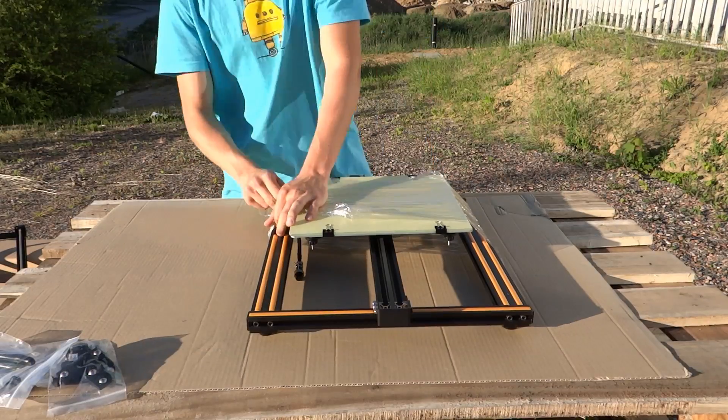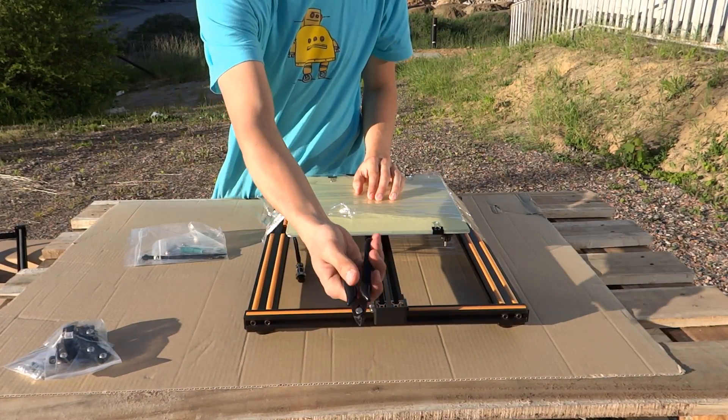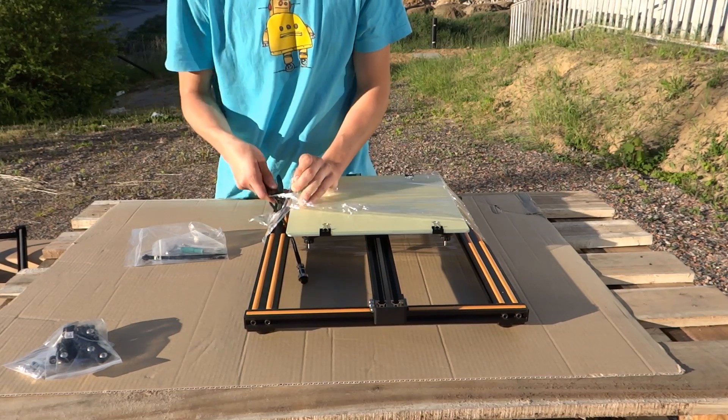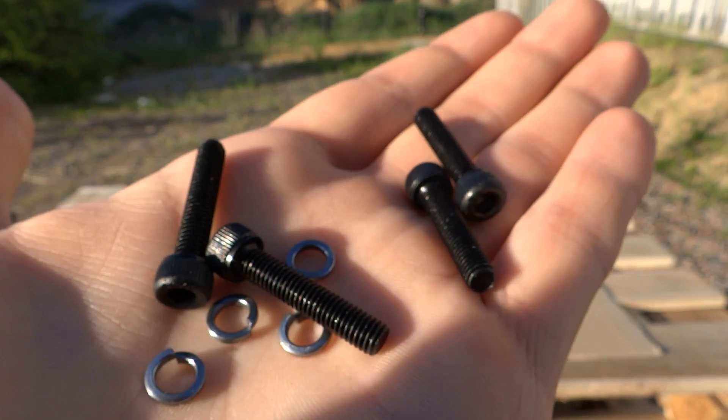Now we can start assembling. Shouldn't take more than 30 minutes so don't worry. We can begin with the bottom part and removing the protection foil from it. It is quite strong so you can use cutters from kit to cut it.